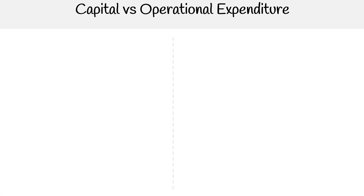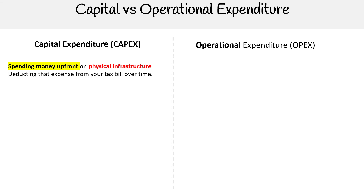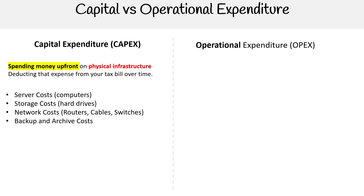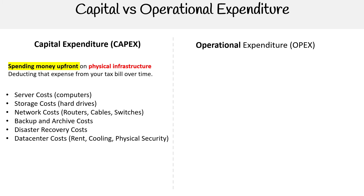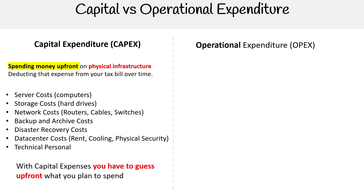Let's talk about capital versus operational expenditures. Capital expenditures, known as Capex, and operational expenditures, known as OPEX. On the Capex side, this is where you're spending money upfront on physical infrastructure and deducting that expense from your tax bill over time. A lot of people say they can get a machine and write it off year after year — but you're going to save way more money than that small tax benefit. Capex expenses include server costs, storage costs like hard drives, network costs like routers and cable switches, backup and archive costs, disaster recovery costs, data center costs like rent, cooling, physical security, and technical personnel. With capital expenses, you have to guess upfront what you're going to plan on spending, because once you have those assets, you're going to hold on to them for a period of time.